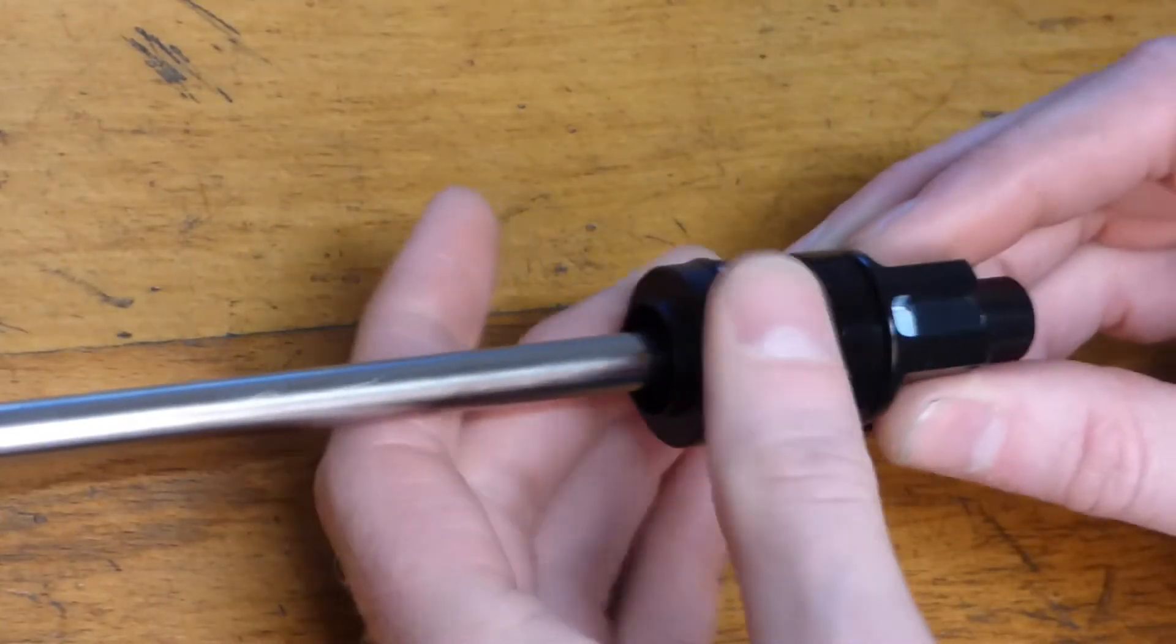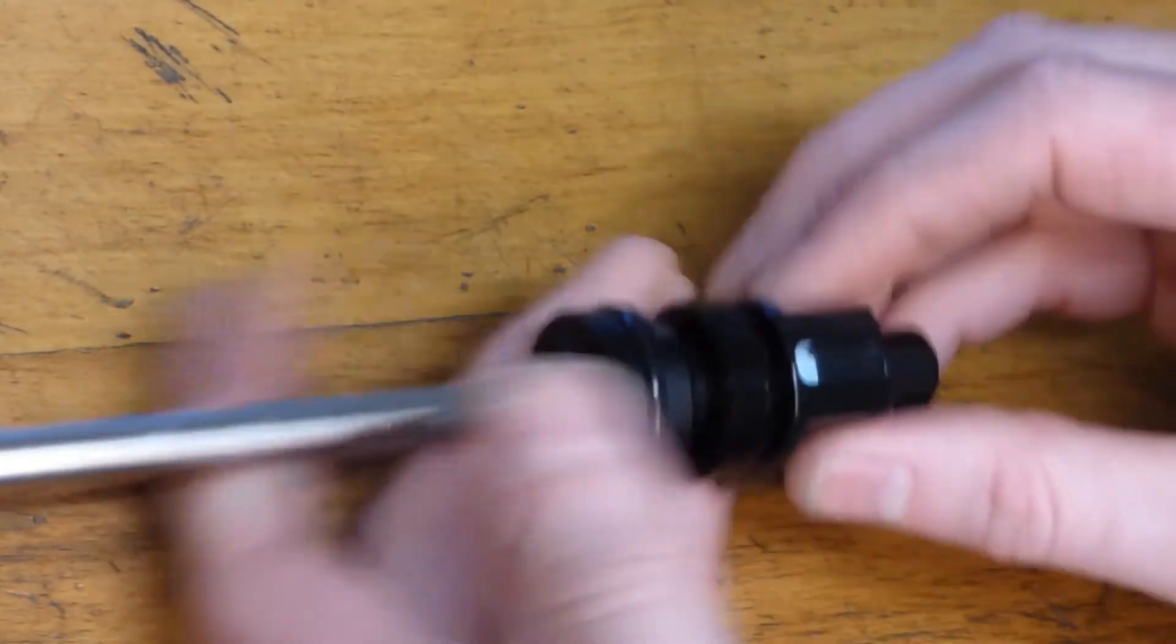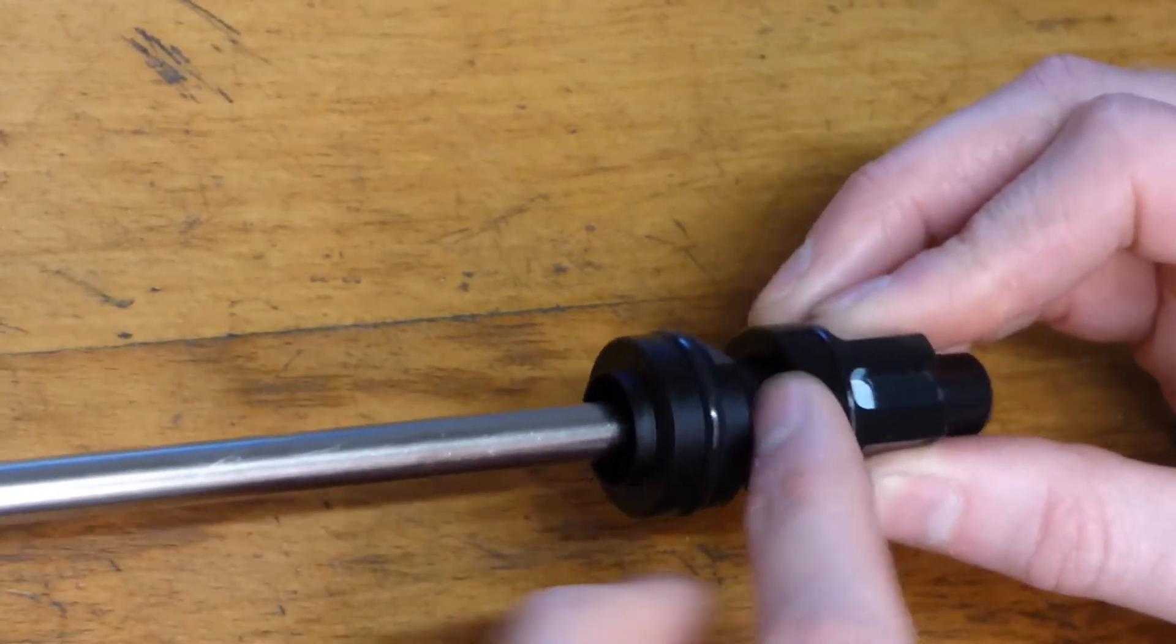So new barrel's in, new hop-up rubber is on. Obviously barrel's all tightened in, barrel spacer is held in, the grub screws are all popped in.